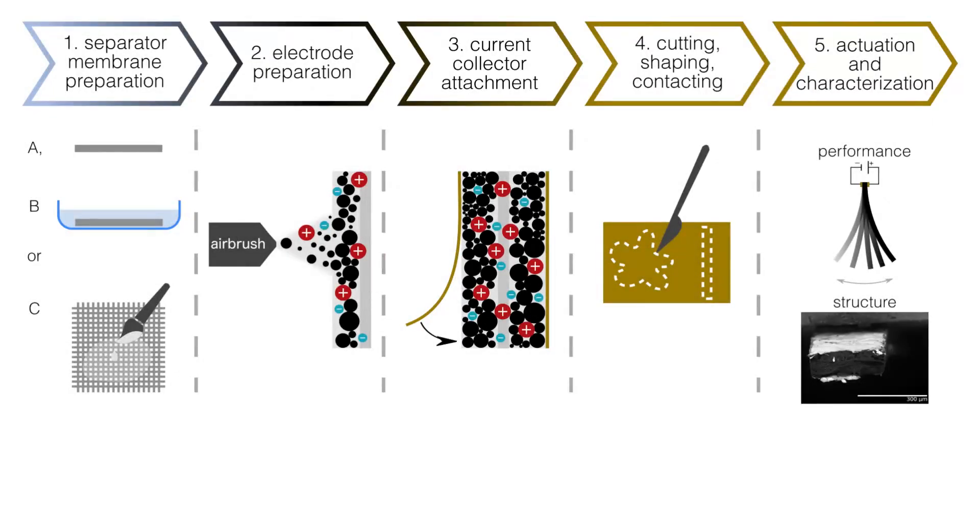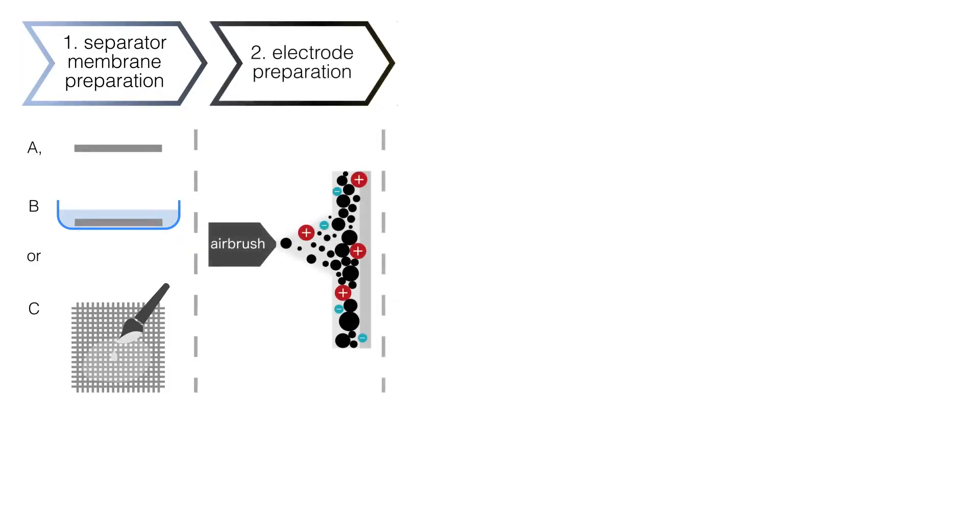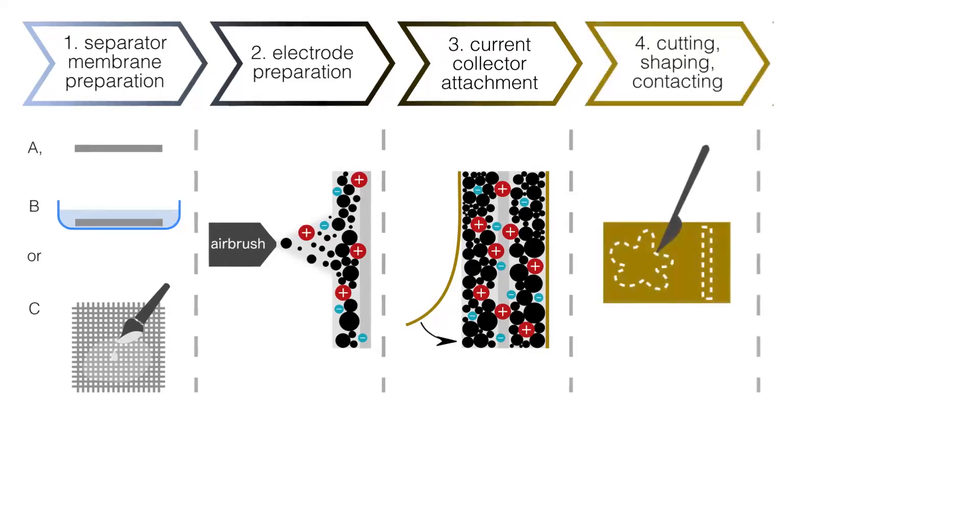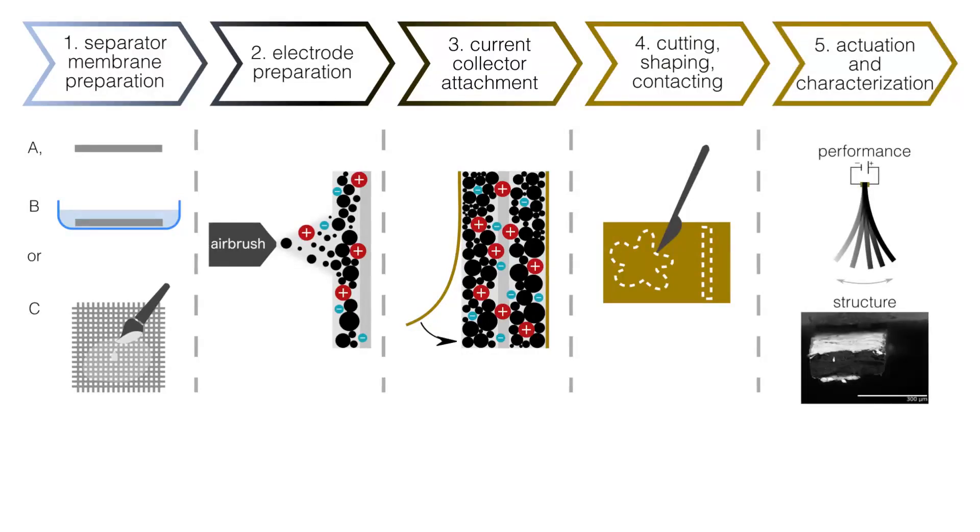The protocol is divided into five steps. First, an ion-conductive membrane is prepared. It is then covered with carbon-based electrodes, to which the gold current collectors are attached. After cutting the sample into shape, the material is ready for use.